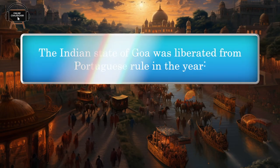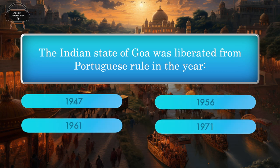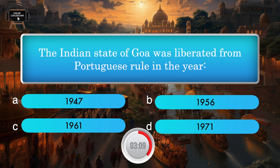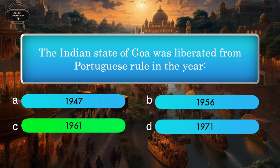The Indian state of Goa was liberated from Portuguese rule in the year — 1947, 1956, 1961, 1971. Answer: 1961.